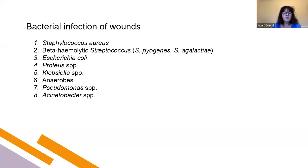Infections of wounds can arise from Staphylococcus aureus, beta-haemolytic streptococcal infections especially Group A Strep, and some gram-negative organisms and anaerobes. Sometimes bacteria can be colonizing the skin and in this case they do not need to be treated with antibiotics, but if there is clinical evidence of infection, then antibiotics may be indicated.